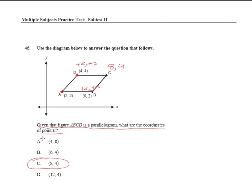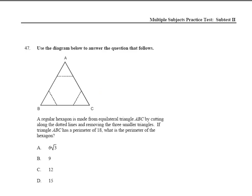Really not much to that one at all when you think about it. Let's go on to Question 47. A regular hexagon is made from equilateral triangle ABC by cutting along the dotted lines and removing the three smaller triangles. If triangle ABC has a perimeter of 18, what is the perimeter of the hexagon?